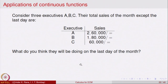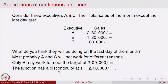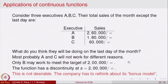So A and C will most likely not be working on the last day, for different reasons, and only B may be working. This is what the bonus model leads to. Because the function has a discontinuity at the 2 lakh mark, it is advisable for the firm to tweak the bonus formula to avoid this scenario and ensure everybody works. Mathematics helps make decisions for economic changes.